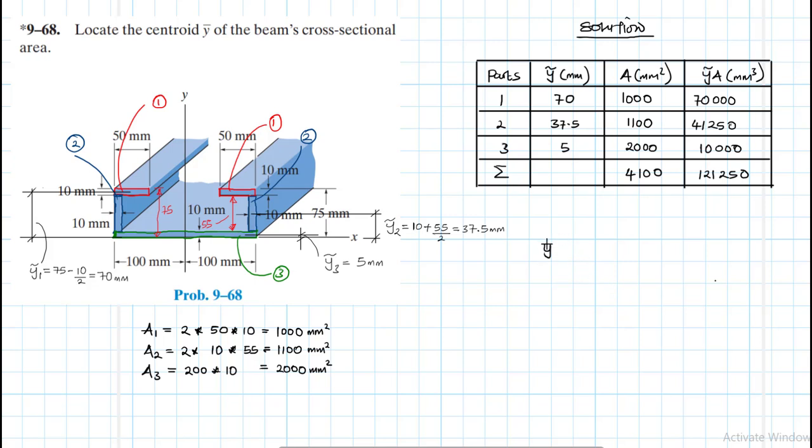So y-bar therefore is equal to summation of the products of y times A, where n starts from 1, 2 and 3, divided by the total area. So this is equal to 121,250 divided by 4,100. This gives us 29.57.